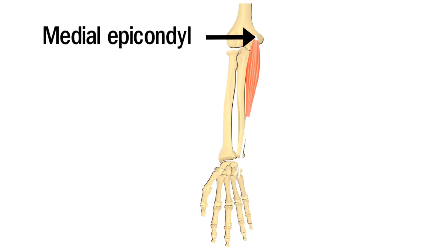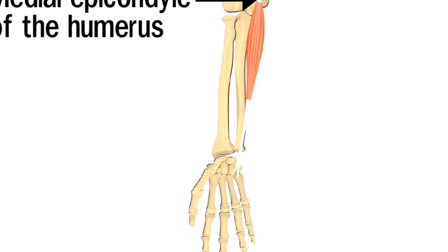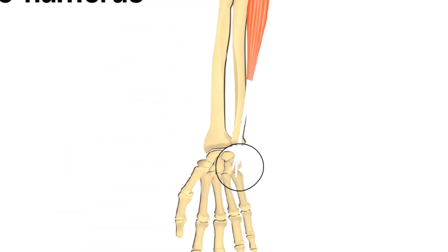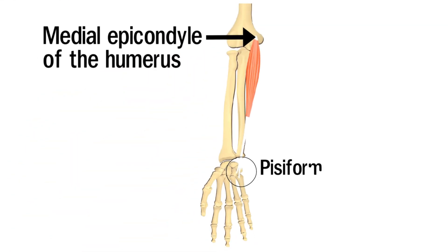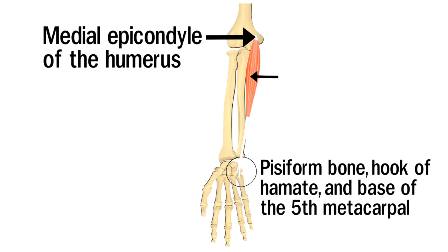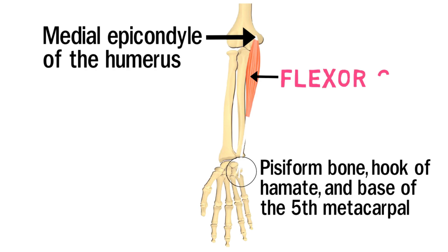This is the medial epicondyle, and this is the point of insertion: the pisiform bone, hook of hamate, and the base of the 5th metacarpal. So this muscle is the flexor carpi ulnaris.